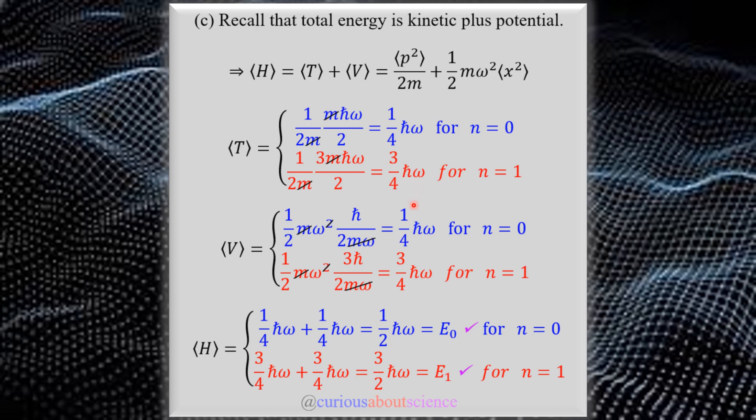Do the same thing with the expectation value of x squared. Simplify it down. Cancel the m and omega term with the m and omega term in the denominator. Sure enough, we get a 1 over 4 h-bar omega and a 3 fourths h-bar omega. So not only is the potential three times greater for n=1 than the ground state, but notice that the potential and the kinetic split the energy.